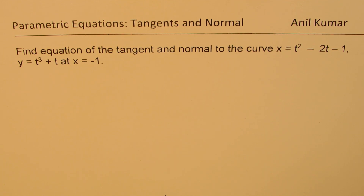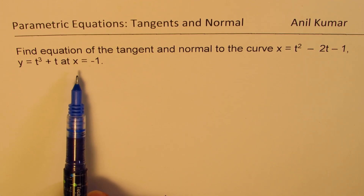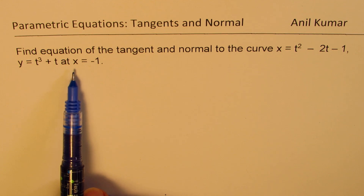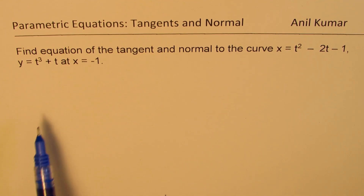The equation is: find the equation of the tangent and normal to the curve x equals t squared minus 2t minus 1, y equals t cubed plus t, at x equals minus 1. This question is relatively complicated since we are not giving you a point — we are giving you the value of x.